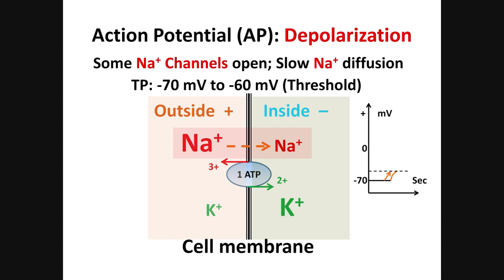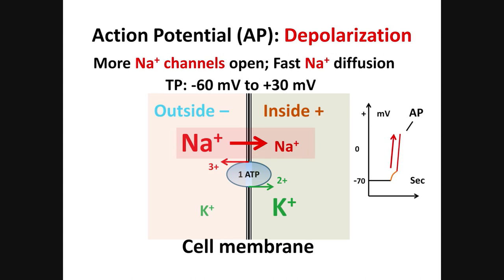Now the horizontal dotted line on the graph marks the so-called threshold level. Reaching this TP level is a signal for many more sodium channels to open. Many more sodium channels open, and sodium moves into the cell much faster — you can see it as the thick red arrow. The fast movement of positive ions into the cell makes the inside of the cell even more positive, and the potential goes all the way from negative to positive numbers. Let's say it goes from minus 60 to plus 30.